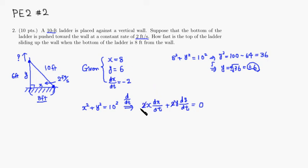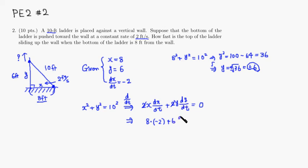Then we plug in everything we know. X is 8, so plug it in. So you have 8 times dx/dt, which is negative 2. Put that in. And then Y — we know that Y turned out to be 6. Then dy/dt is actually what we're looking for, since we are looking for the rate of change of Y. So dy/dt is what we're looking for.